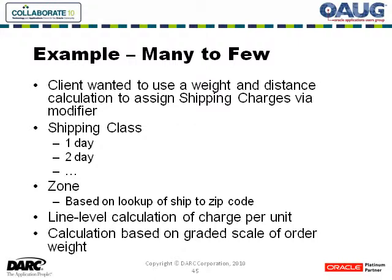In this particular example, the other common thread was a line-level calculation of the freight charge per unit. Rather than just creating a lump sum modifier, each line had to have its portion of the total freight charge attributed to it. In addition to shipping class and zone, we typically had a graded scale of weight — zero to one pound, one to two, et cetera. In the worst case, there were 150 levels of weight grading.